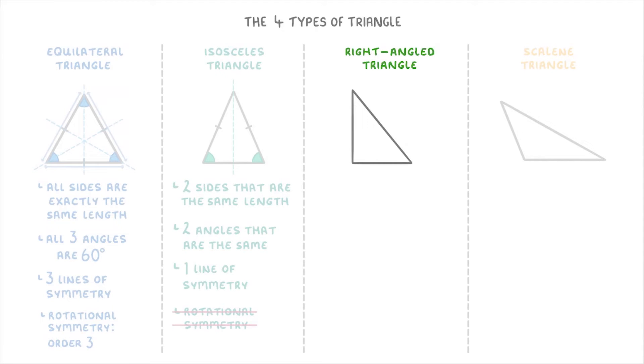Moving on to right angled triangles, the special thing about these is that they have a right angle, which they normally show by putting this little square in the corner. Right angled triangles don't normally have any lines of symmetry or any rotational symmetry.